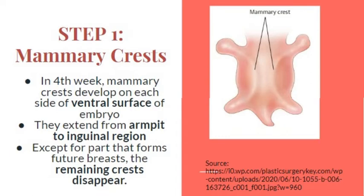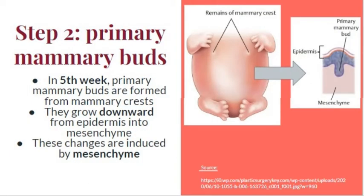Step 2 — formation of primary mammary buds: in the fifth week, primary mammary buds are formed from the remaining mammary crest. They grow downward from the epidermis into the mesenchyme, as you can see in the figure on the right side. These changes are induced by the mesenchyme.